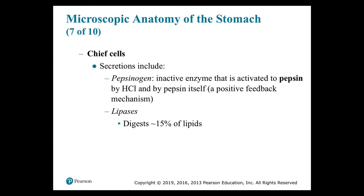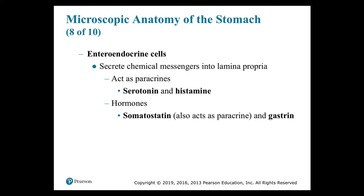Chief cells also produce lipases, which digest about 15% of lipids or fats. Interestingly, the stomachs of newborn infants (but not adults) produce rennin, also known as chymosin. Together with lipases, rennin coagulates milk proteins, while gastric lipase initiates digestion of milk fats. Enteroendocrine cells secrete chemical messengers into the lamina propria — acting as paracrines (locally acting messengers) including serotonin and histamine — and also secrete hormones such as somatostatin (which also acts as a paracrine) and the hormone gastrin.